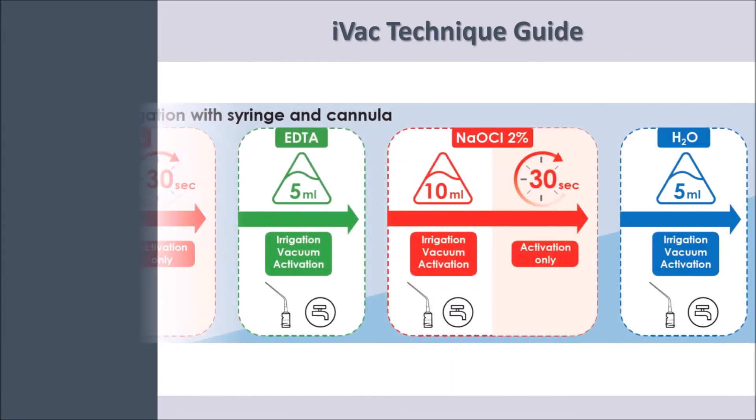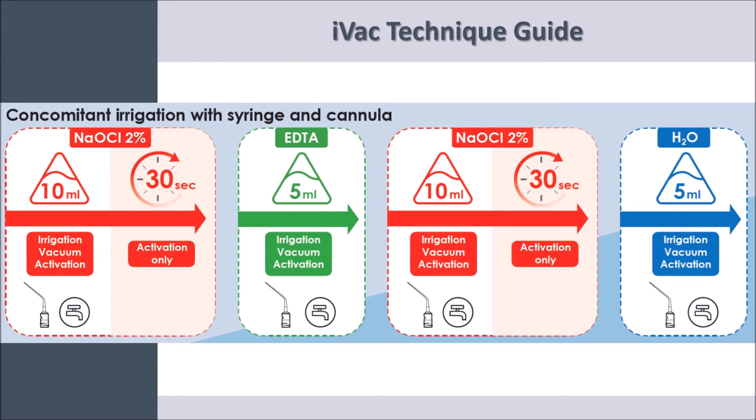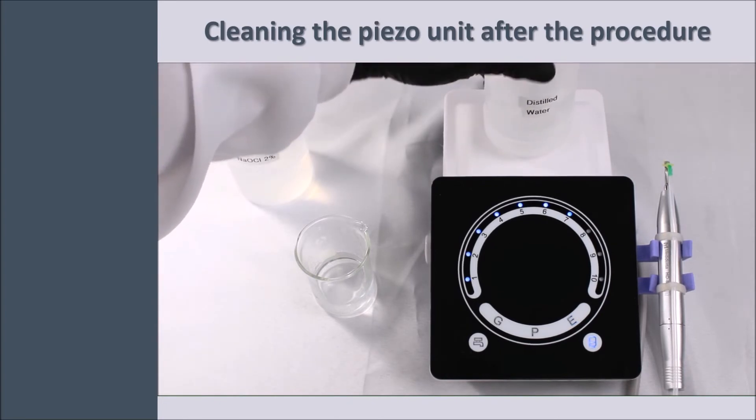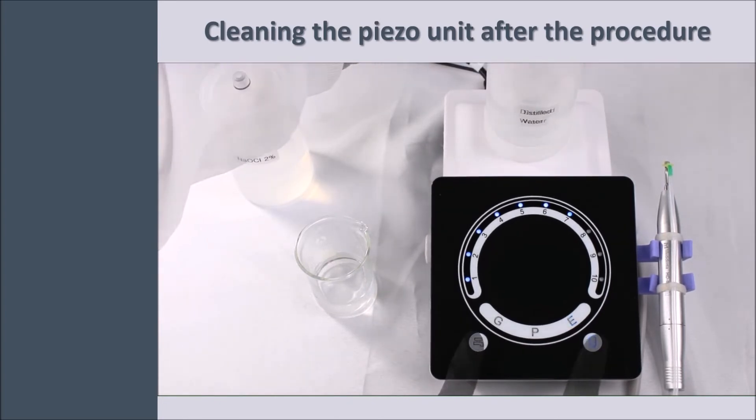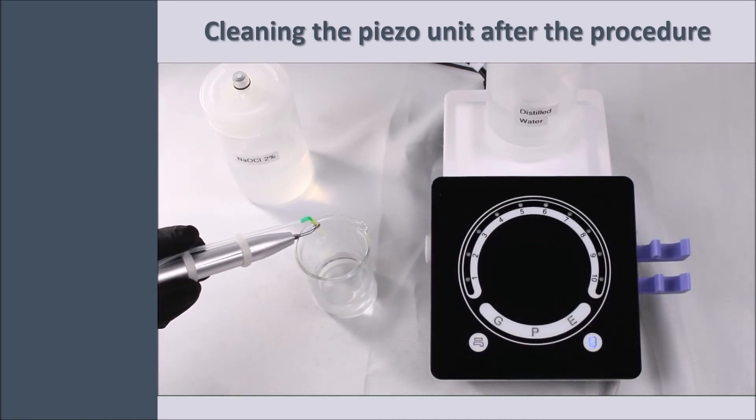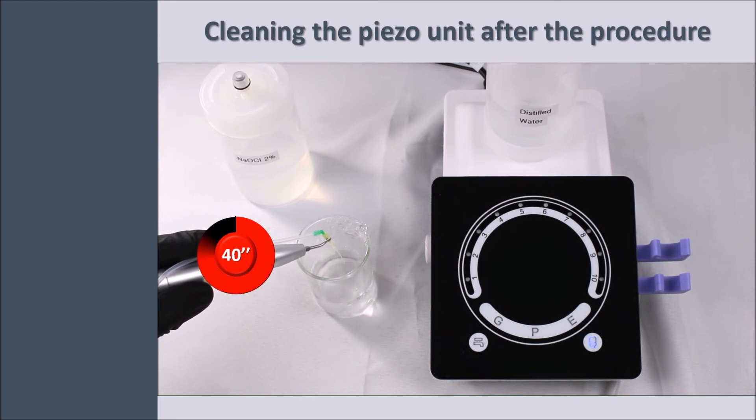After finishing with your patient, proceed with purging the equipment. Remove the sodium hypochlorite bottle and install the distilled water bottle. Touch the buttons with the faucet and bottle icons simultaneously. The button with the bottle icon will start flashing, indicating that the flushing mode is activated. Place the handpiece next to a plastic cup or container. Press the pedal once and wait until automatic shutdown.